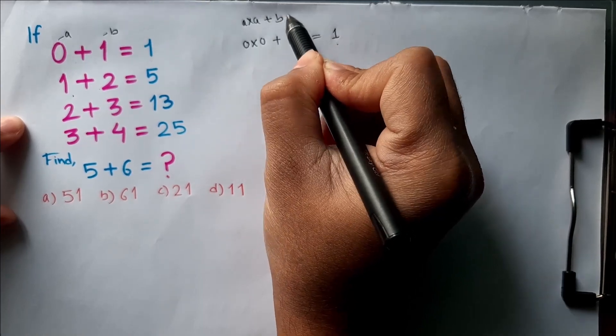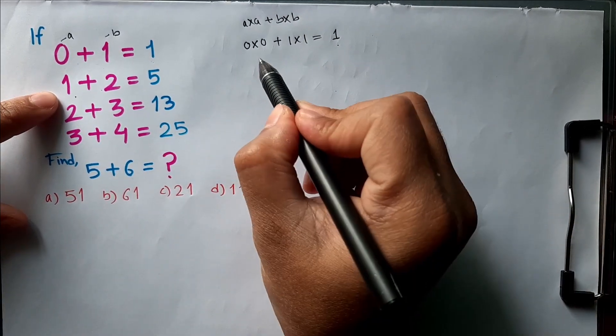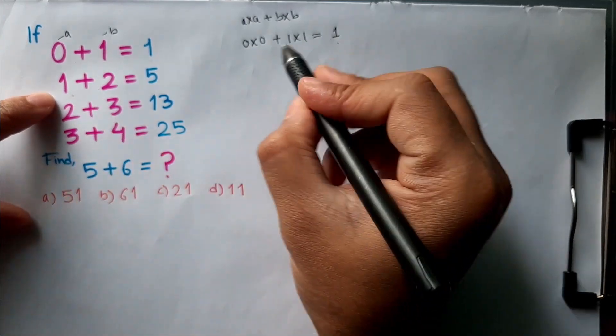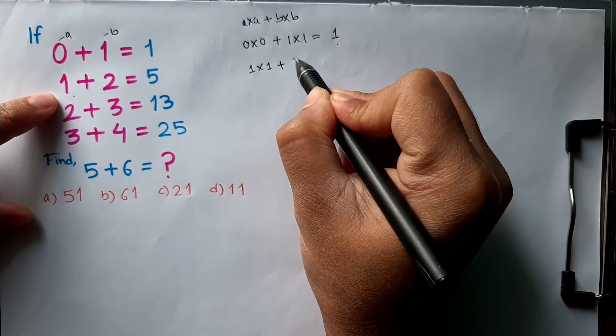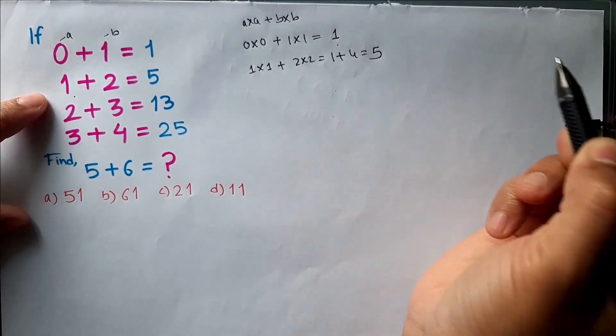× a + b × b. So if we apply here, 1 × 1 + 2 × 2, we'll get 1 + 4, that is 5.